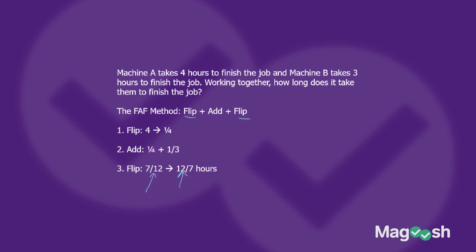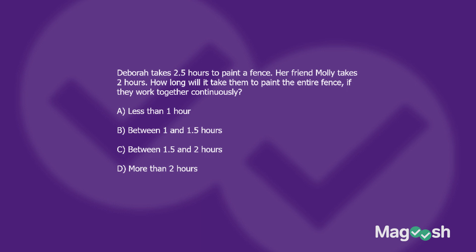So to recap: take both rates, flip them to get their reciprocals, add those reciprocals together, then flip the result one final time to get the answer. Now let's try that with the next problem featuring Deborah. If you want to be bold, pause and try it yourself, then compare your answer with mine.